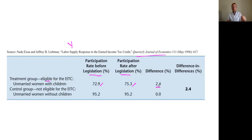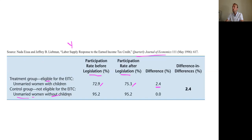So we need a counterfactual change. The authors used unmarried women without children — they don't get the EITC but live through the exact same time periods. If anything is changing in the world, it changes for this group too. And if you look: they were at 95.2% before and 95.2% afterwards — no change. The difference was zero. So the difference-in-differences is 2.4 minus zero equals 2.4. We can now say this is a causal impact estimate: the 2.4% increase in people working is directly and causally attributed to the earned income tax credit.